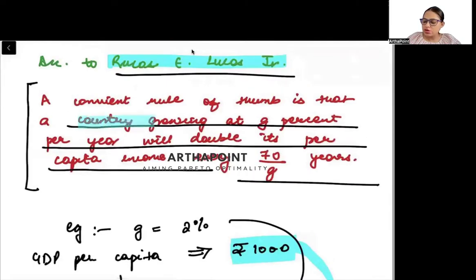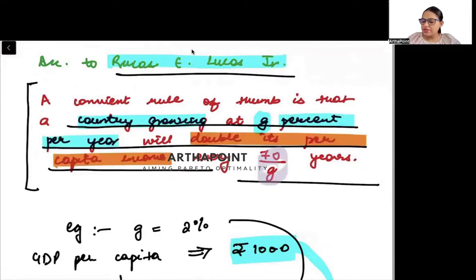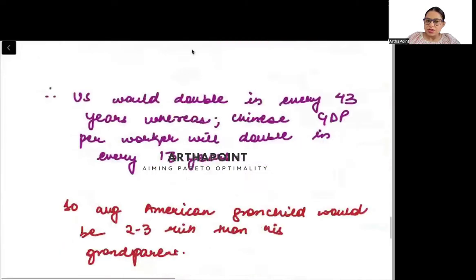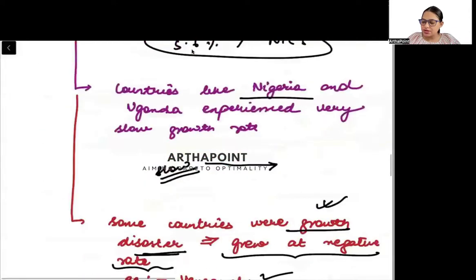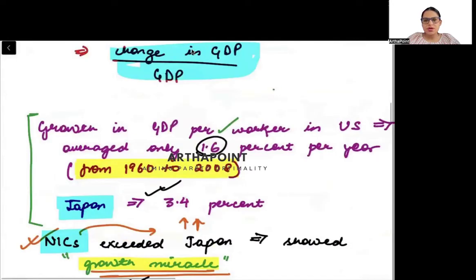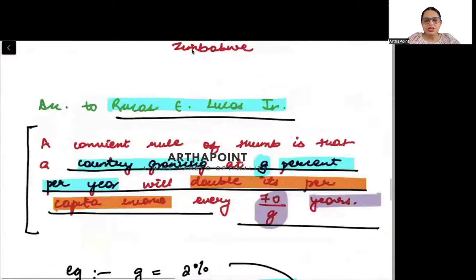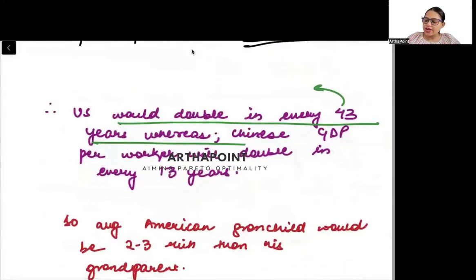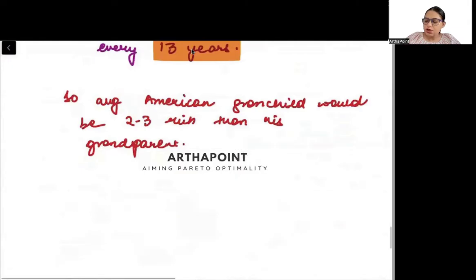A country growing at G percent per year will double its per capita income in every 70 by G years. Every 70 by G years, the income will double itself. US would double its income in every 43 years, because the growth rate of US was about 1.6, so 70 divided by 1.6. So US will approximately double its income in every 43 years, whereas China will double its income in every 13 years. Suppose there is a person whose age is 30 years today.